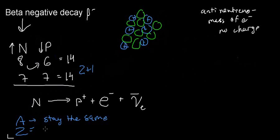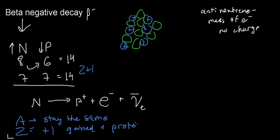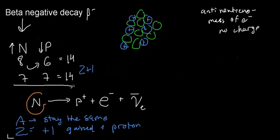Gaining one proton means the element is going to be different — I'm dealing with a different material. The only thing left to discuss is that we know the nucleus contains neutrons and protons.